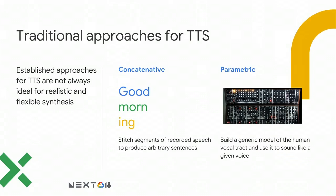Before we had WaveNet, the previous approaches to text-to-speech basically fall into two categories. Usually the highest quality one was concatenative. In this type of approach, we take a large corpus of speech from one speaker and divide it into small slices of a few milliseconds. Then the problem of text-to-speech is just finding the right pieces of speech to reconstruct what you want to say.